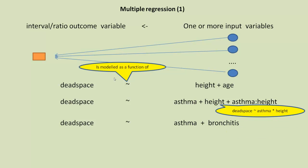Also in R, you can show models different ways. So if you just put dead space tilde asthma star height, it would actually mean asthma plus height plus that interaction term asthma and height. We'll come back to that when we actually do the example and you'll see what it means exactly.